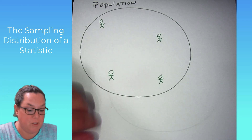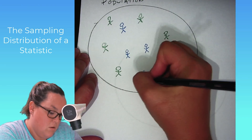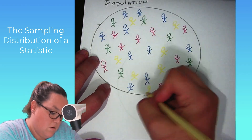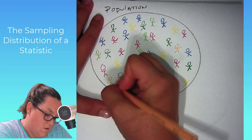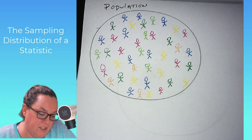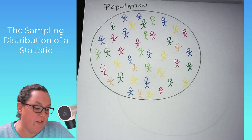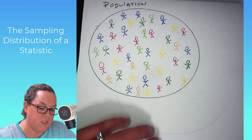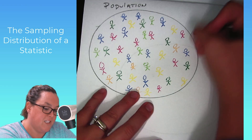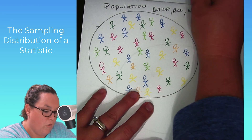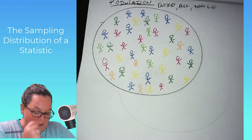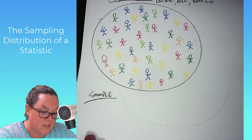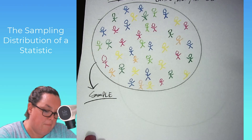You're going to see me creating a population. So, this is our population. It's a population of little people, all different colors. Now, when you perform a statistical inference, your goal is to take from a population a sample — some sample through some sampling method. This is the entire group, the whole group, and that's why we refer to this as a population.